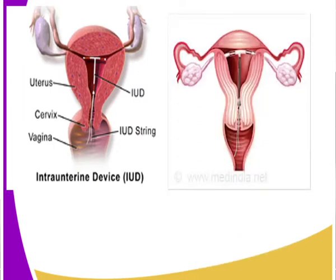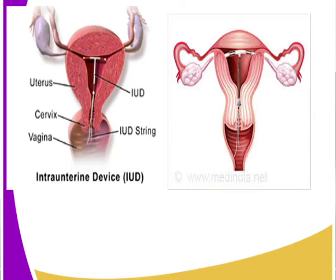That is also the T-shape IUD, very well explained - it is mostly used in women. Now let's look at another method, which is sterilization. This consists of minor surgical operations, and both men and women can be sterilized using different methods.